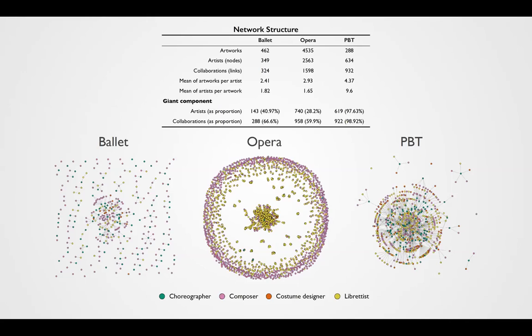The PBT network showed a more even composition, representing individuals working together to put performances on stage rather than only creating new works. The Wikidata networks showed a larger number of isolated components, likely an artifact of Wikidata coverage having profiles but missing some collaborations. This reduces our chances for more detailed network analysis, yet we believe this is a good starting point to overcome the challenge of analyzing collaborative behaviors in performing arts. Thank you for listening.